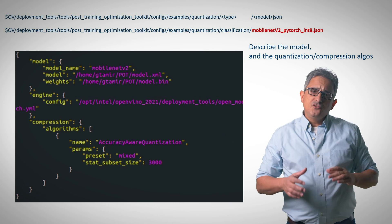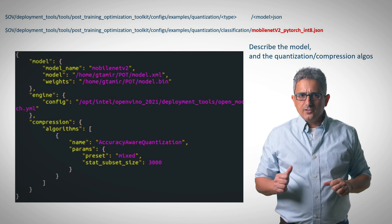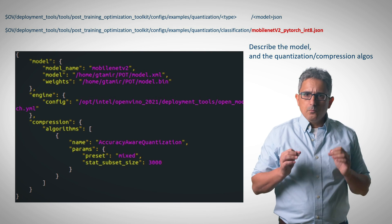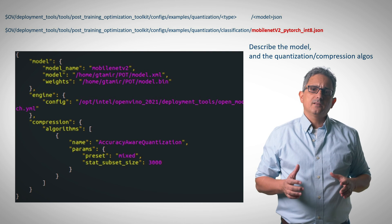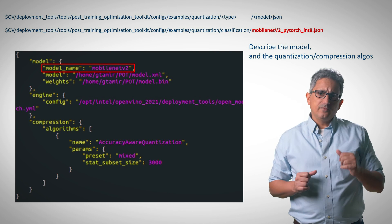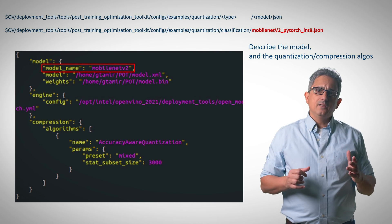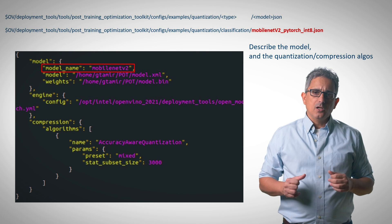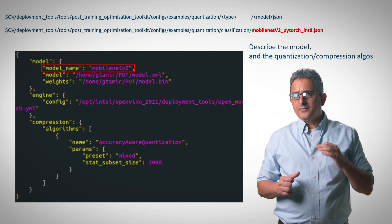The last one is a JSON file and you can find it in this location. It describes the model that we are trying to optimize and the algorithms to use. Here we are using MobileNetV2 model and performing accuracy aware quantization on a subset of 3000 images.